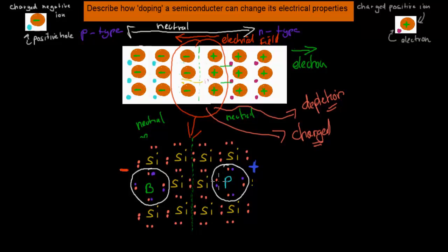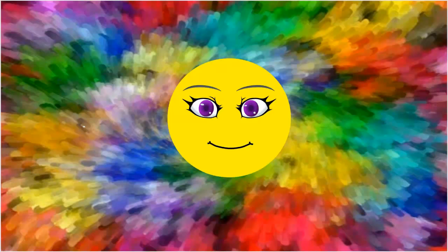You need to have a basic understanding of what happens when we put the p-type and the n-type junction together. Hopefully the rest of the video was also somewhat useful. Thank you for watching.